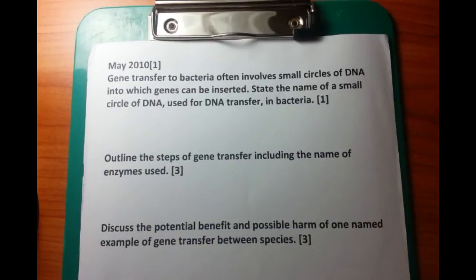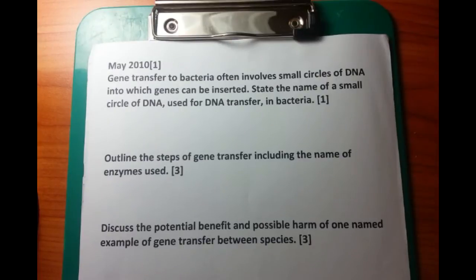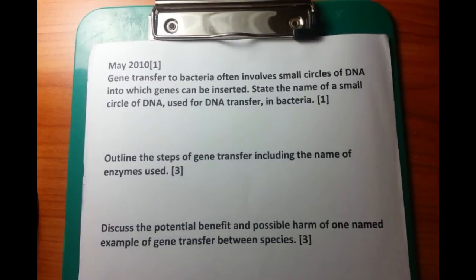Gene transfer to bacteria often involves small circles of DNA into which genes can be inserted. The question asks: state the name of a small circle of DNA used for DNA transfer in bacteria. This is easy — you need to know that it's a plasmid.